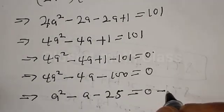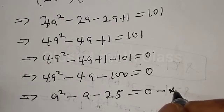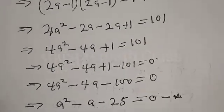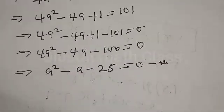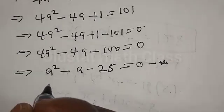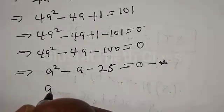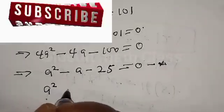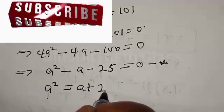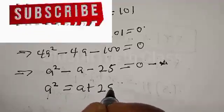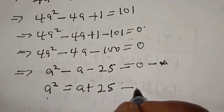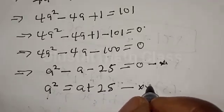So let's call this equation star. From equation star, a squared will be equal to a plus 25. Let's call this equation star star.